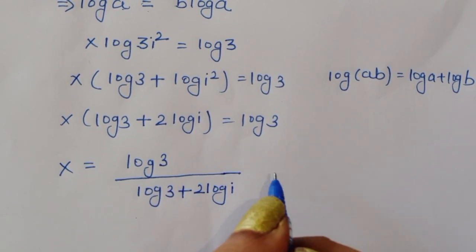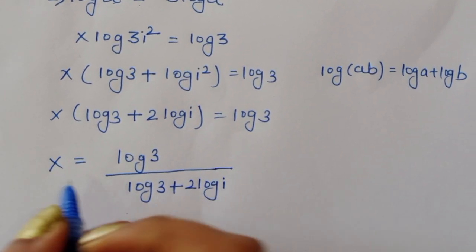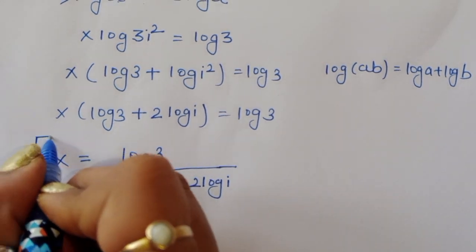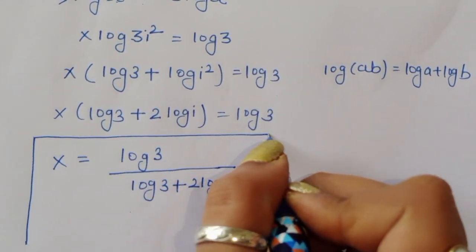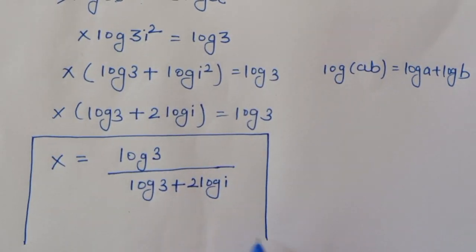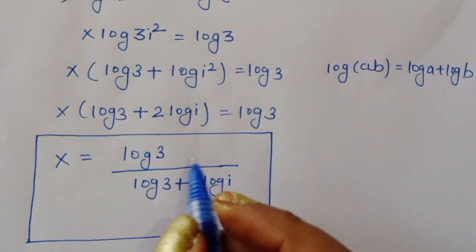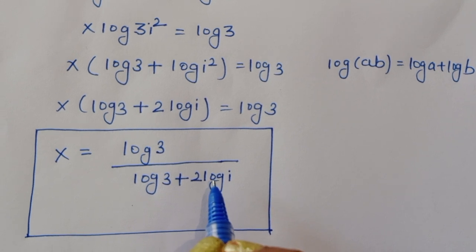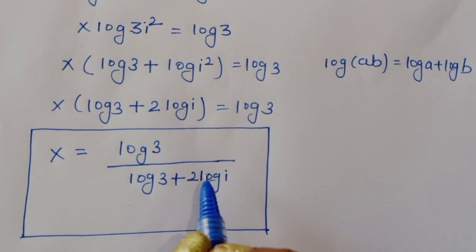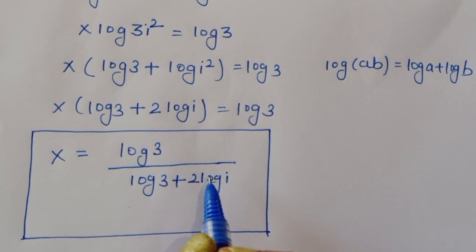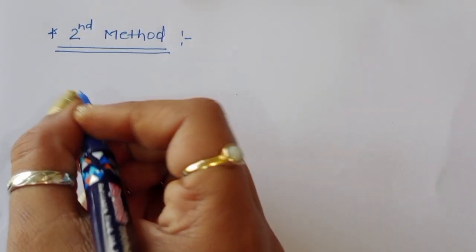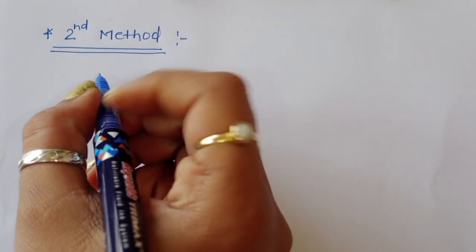Therefore, x equals log of 3 divided by the quantity log of 3 plus 2 log of i. This is the value of x and the solution using the first method. Now we can solve this using the second method.